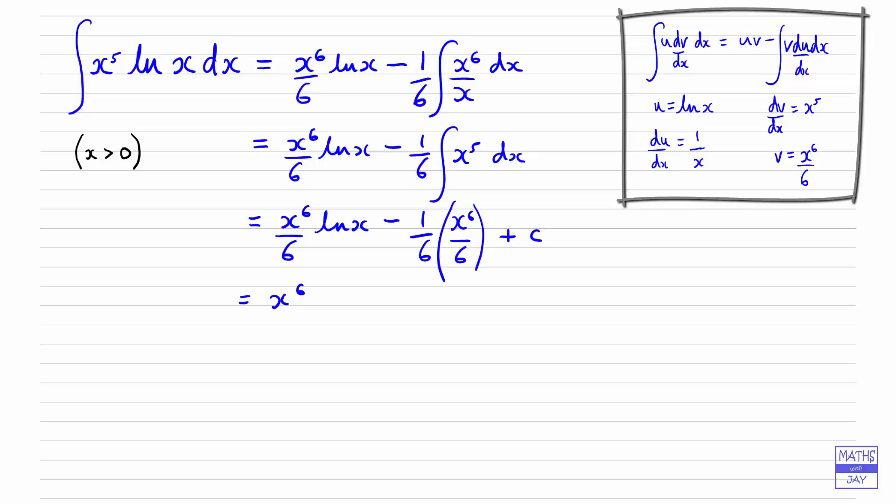So we've got x to the power of 6 over 6 log x, minus, and then all we need to do here is multiply 6s together in a denominator to give us 36.